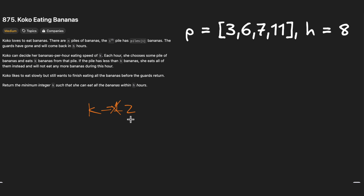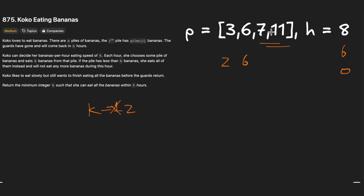With k=2 bananas per hour, the first pile of three takes two hours — first hour eat two, second hour eat one. That leaves six hours. Then for the six-banana pile we need three hours, using all remaining time with piles still left. So k=2 is also not the answer. Let's try k=3.